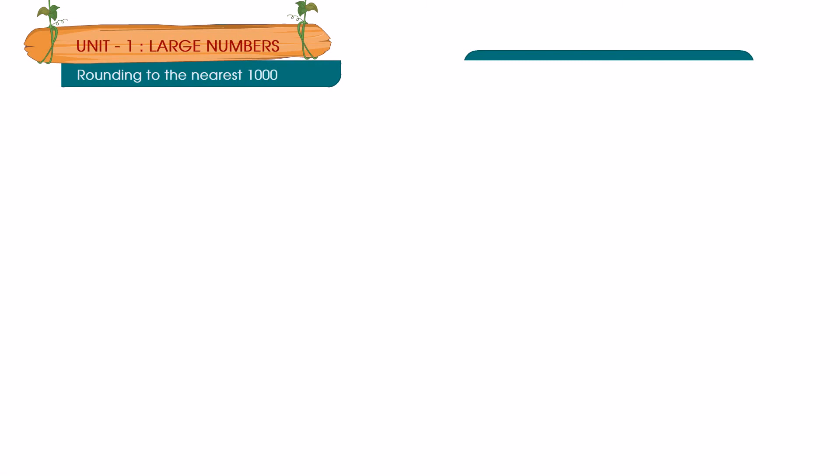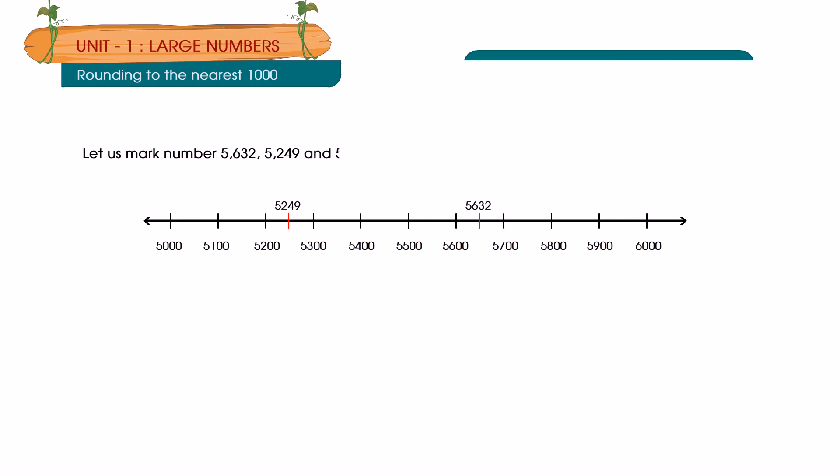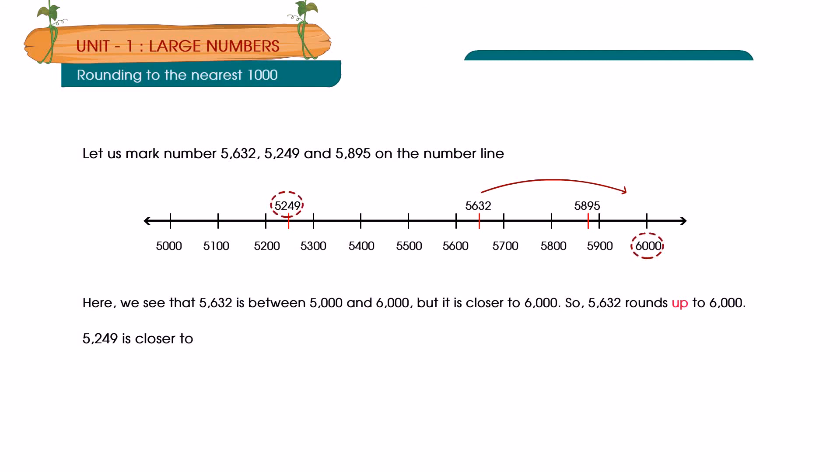Rounding to the nearest thousand: Let us mark numbers 5632, 5249 and 5895 on the number line. Here we see that 5632 is between 5000 and 6000, but it is closer to 6000, so 5632 rounds up to 6000. 5,249 rounds down to 5000. 5,895 is closer to 6000, so 5,895 rounds up to 6000.